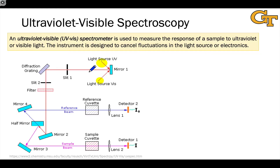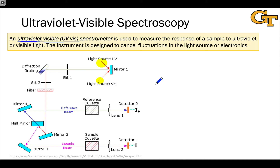Let's talk about ultraviolet-visible spectroscopy as an analytical method. Generally speaking, we need to use either ultraviolet or visible light to convert a molecule into its excited state, to excite a molecule to a higher electronic level. The device used to do this is a UV-VIS, or ultraviolet-visible spectrometer. This is a double-beam instrument that uses a reference beam to avoid issues with fluctuations in the light source as the experiment takes place.